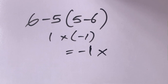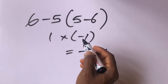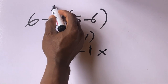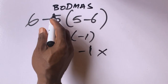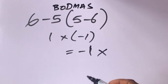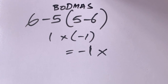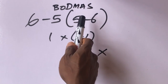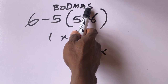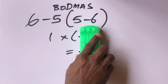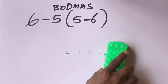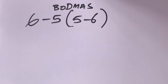According to order of operations, we have to first of all solve what is in the bracket, followed by division, multiplication, then subtraction. So if you are following this order of operation, let's see the correct answer.